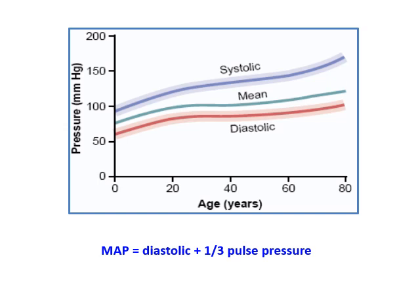We cannot take an arithmetic mean by simply adding the systolic and diastolic values and dividing by 2. The mean arterial blood pressure equation equals diastolic blood pressure plus one-third of the pulse pressure. The pulse pressure is the difference between the systolic and diastolic blood pressure, and it ranges between 30 to 60 mmHg, with an average of 40 mmHg.